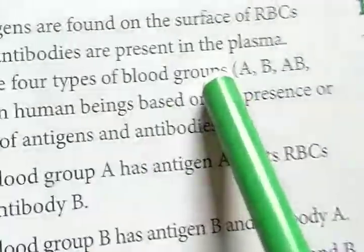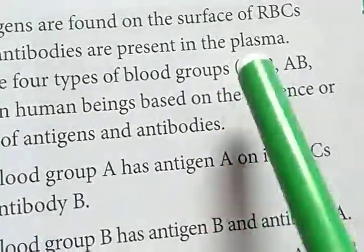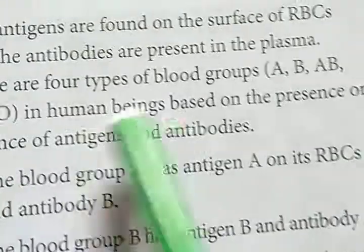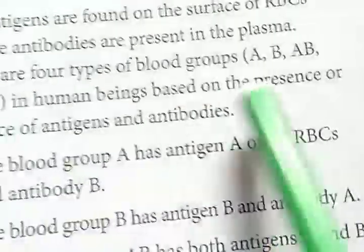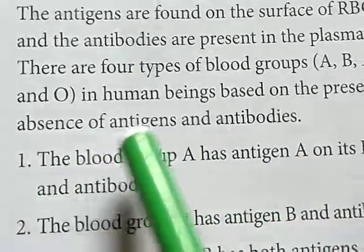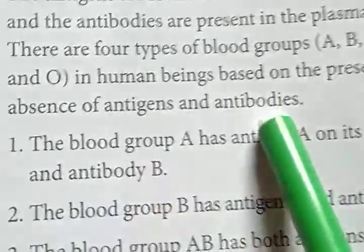Blood groups are basically four types — A, B, AB, and O — in human beings, based on the presence or absence of antigens and antibodies.